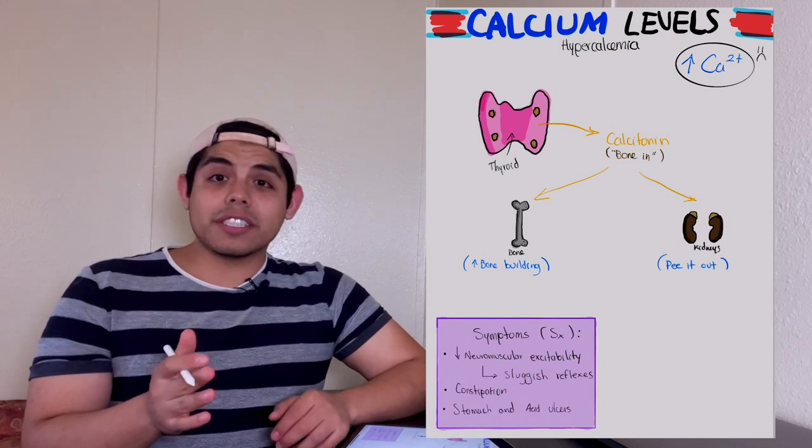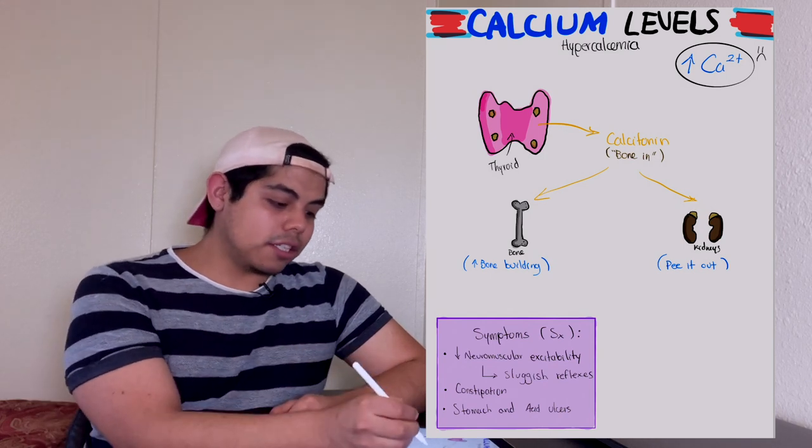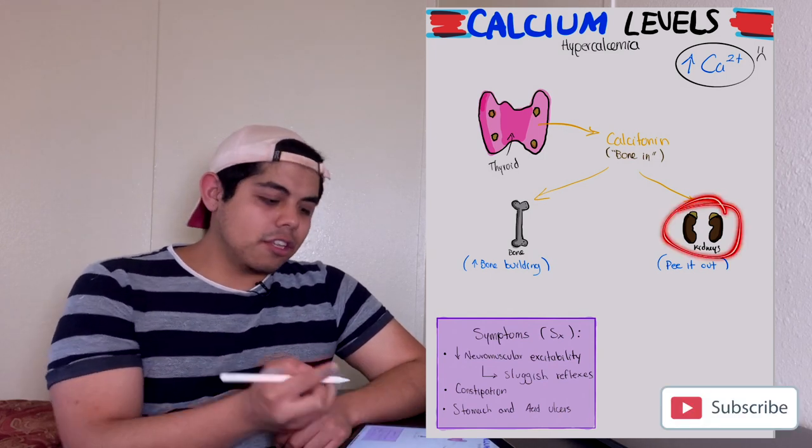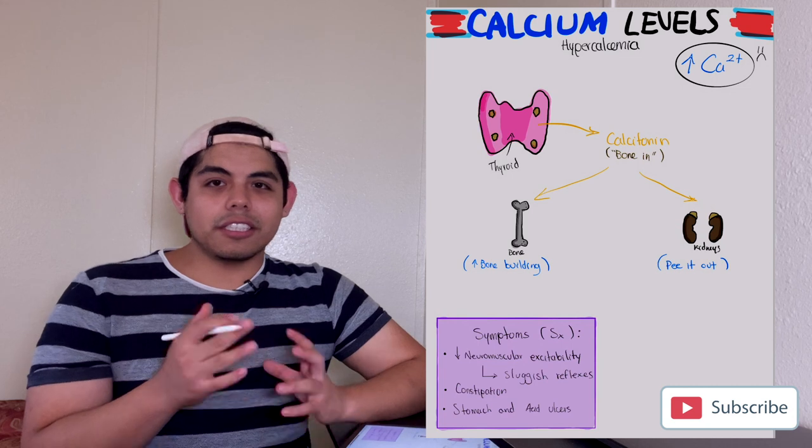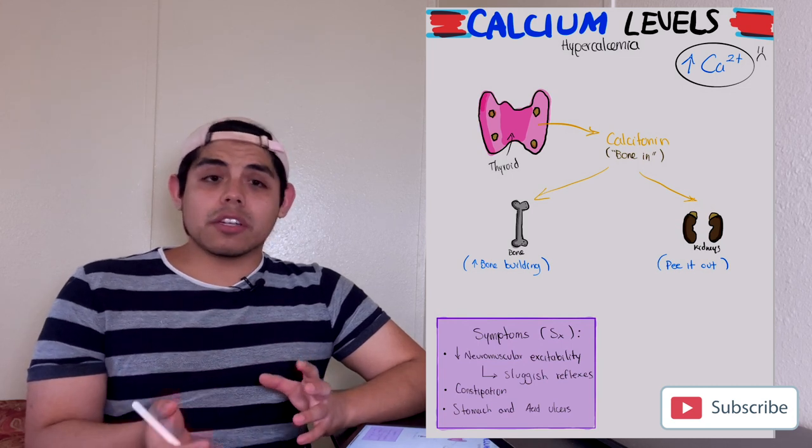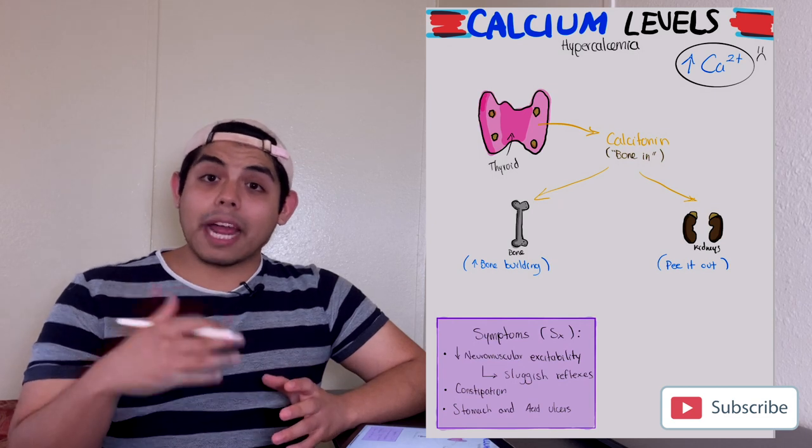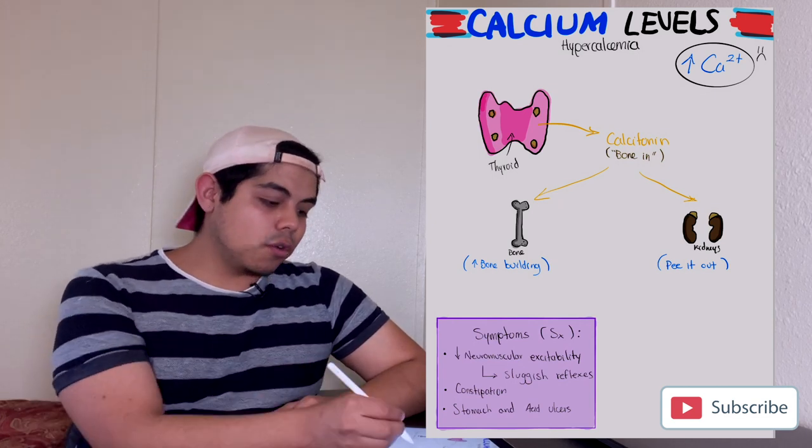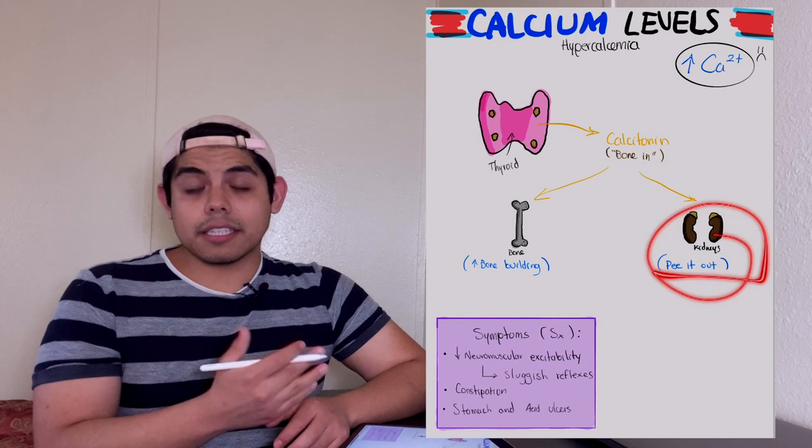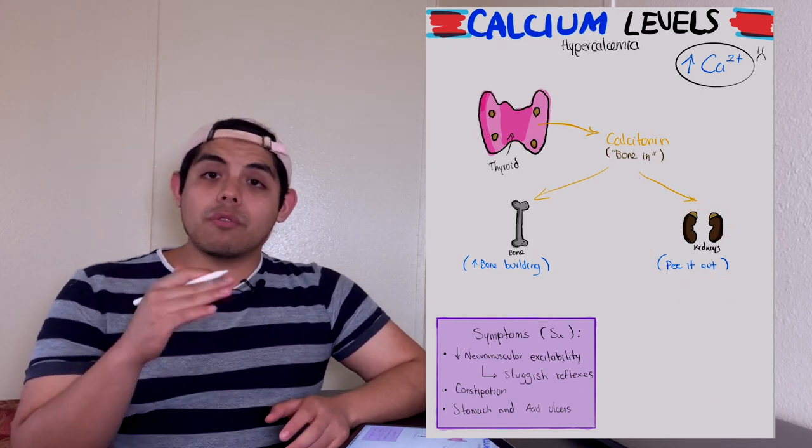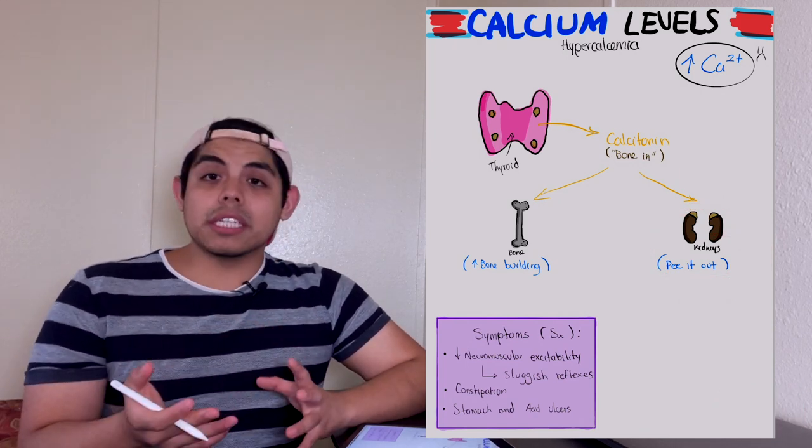Now the other targeted organ by calcitonin are the kidneys. The job of the kidney is similar to what it does with hypocalcemia, but for hypercalcemia it's going to get rid of the excess calcium from the blood through the urine.